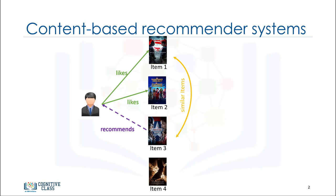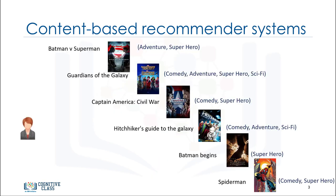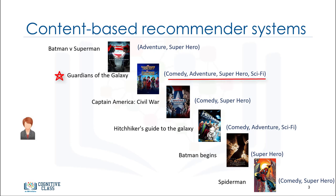Now let's dive into a content-based recommender system to see how it works. Let's assume we have a dataset of only six movies. This dataset shows movies that our user has watched and also the genre of each of the movies. For example, Batman vs. Superman is in the adventure superhero genre, and Guardians of the Galaxy is in the comedy, adventure, superhero, and science fiction genres.